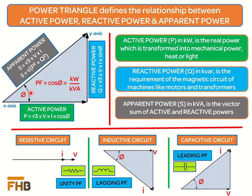In the case of a DC circuit, the product of voltage and current gives the power consumed in watts or kilowatts. This formula is also true for purely resistive circuits such as heaters, filament bulbs, and electric irons, where the voltage and current are in phase and the apparent power S is equal to the active power P.